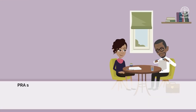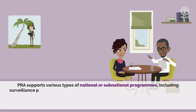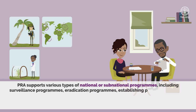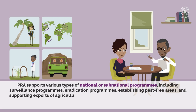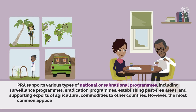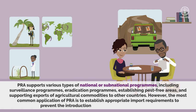Pest risk analysis supports various types of national or subnational programs, including surveillance programs, eradication programs, establishing pest-free areas, and supporting exports of agricultural commodities to other countries. However, the most common application of pest risk analysis is to establish appropriate import requirements to prevent the introduction and spread of regulated pests.